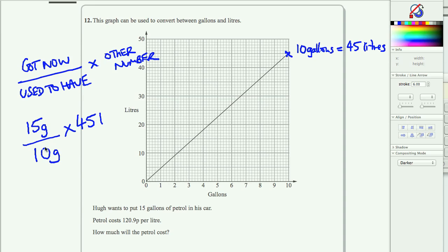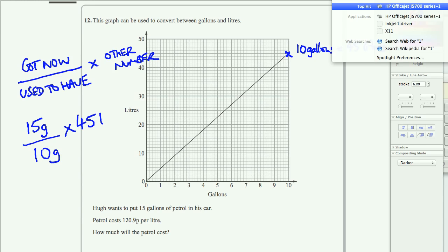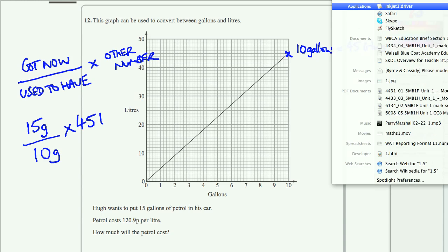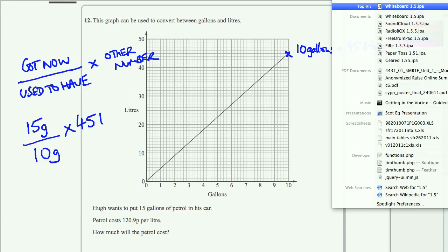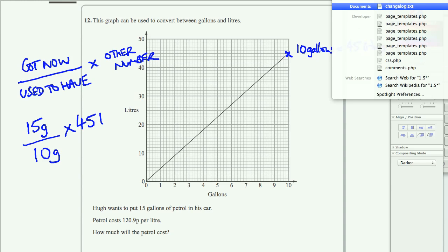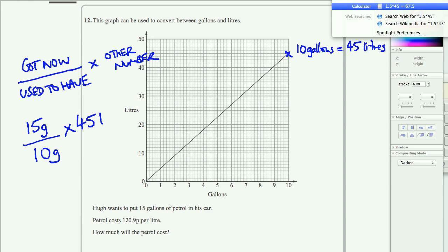So you do that. 15 divided by 10 is 1.5. And we times that by 45. And we should come up with 67.5. Okay, so this answer equals 67.5 litres.